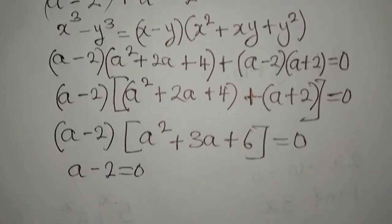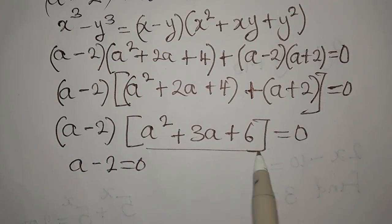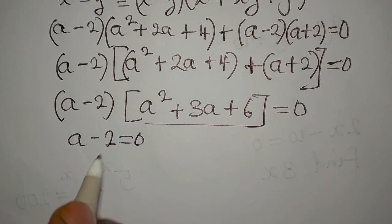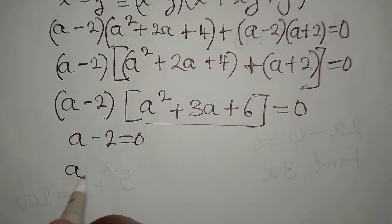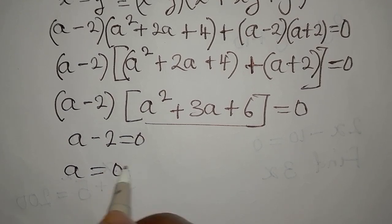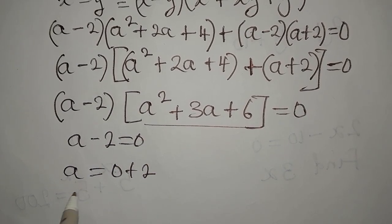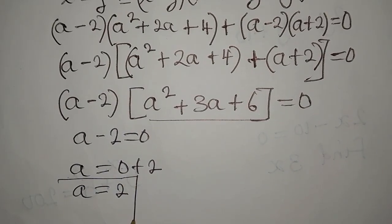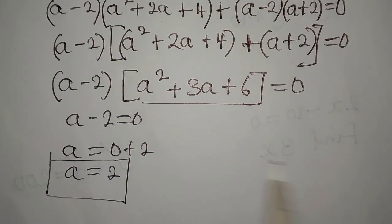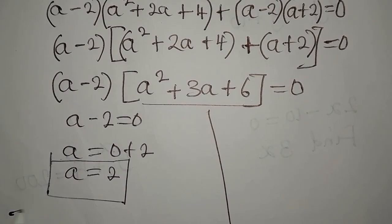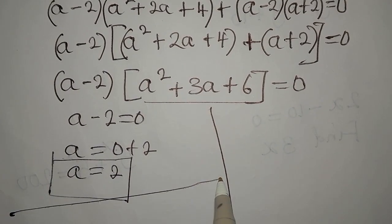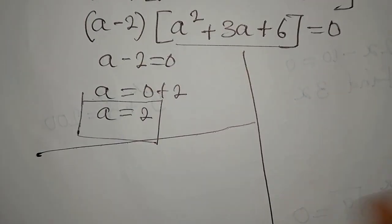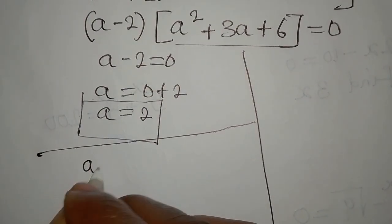So it is either (a - 2) = 0 or (a² + 3a + 6) = 0. From the first factor, a = 2, and this is one of the solutions. We need more solutions, so we move on to the quadratic expression a² + 3a + 6 = 0.